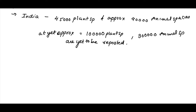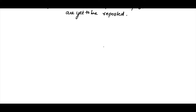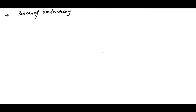There are certain data related to the Amazon rainforest. Before studying that, we need to understand how biodiversity is spread all over the Earth — this is studied as the pattern of biodiversity. When we look at the Earth, at the Equator we see the maximum biodiversity.